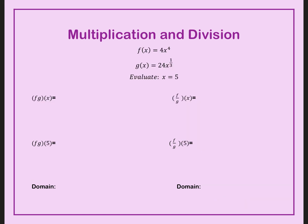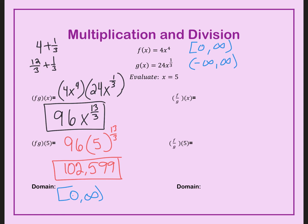Now try the multiplication side on your own — go ahead and pause the video. Check your multiplication. Be careful when you add 4 plus 1 third; the most common mistake is saying that equals 4 thirds. Remember, we have to add them with a common denominator. So 12 thirds plus 1 third is 13 thirds. When I plugged in 5, I got 102,599. The domain must be part of both functions, so with multiplication it's zero to infinity.